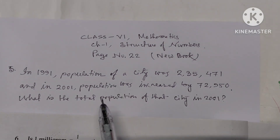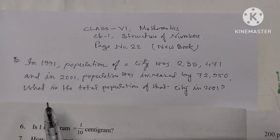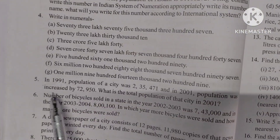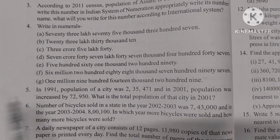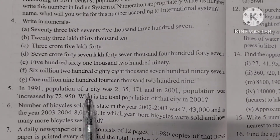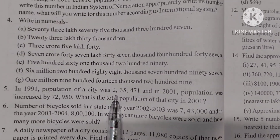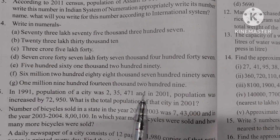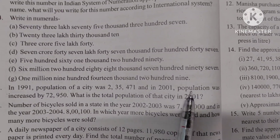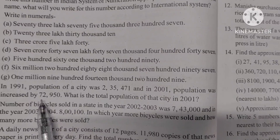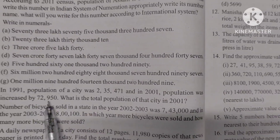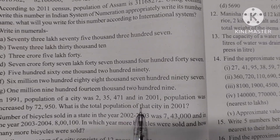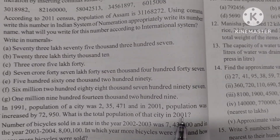In 1991, the population of a city was 2,35,471 and in 2001, the population was increased by 72,950. What is the total population of that city in 2001?